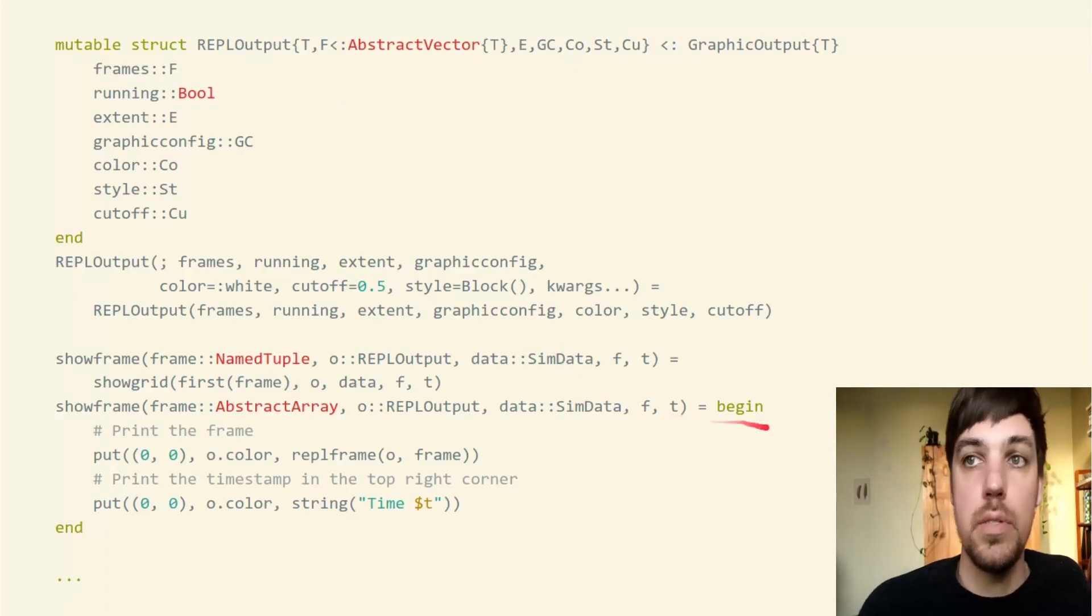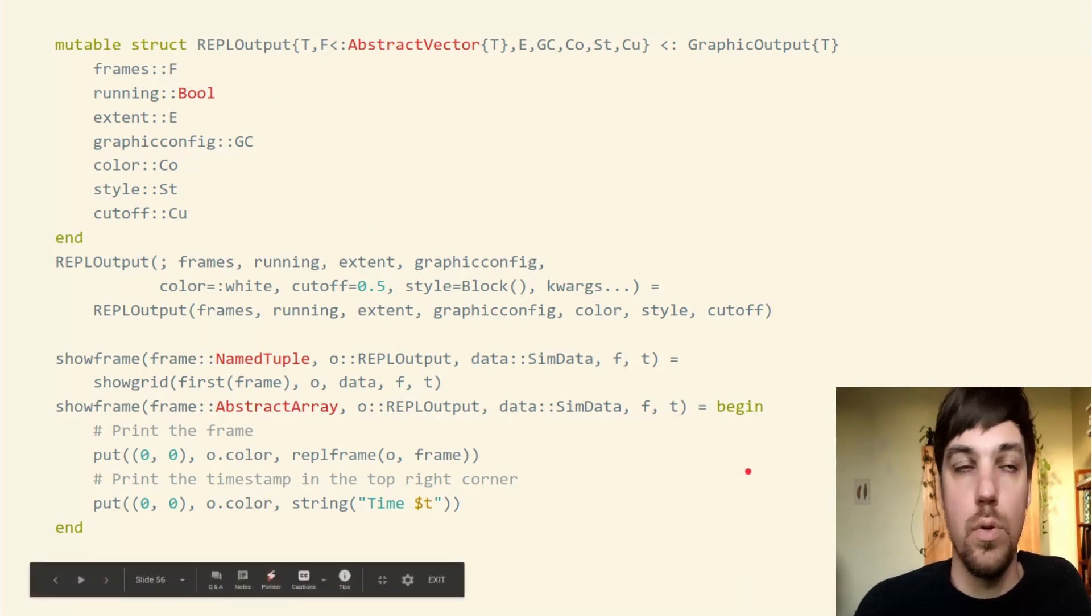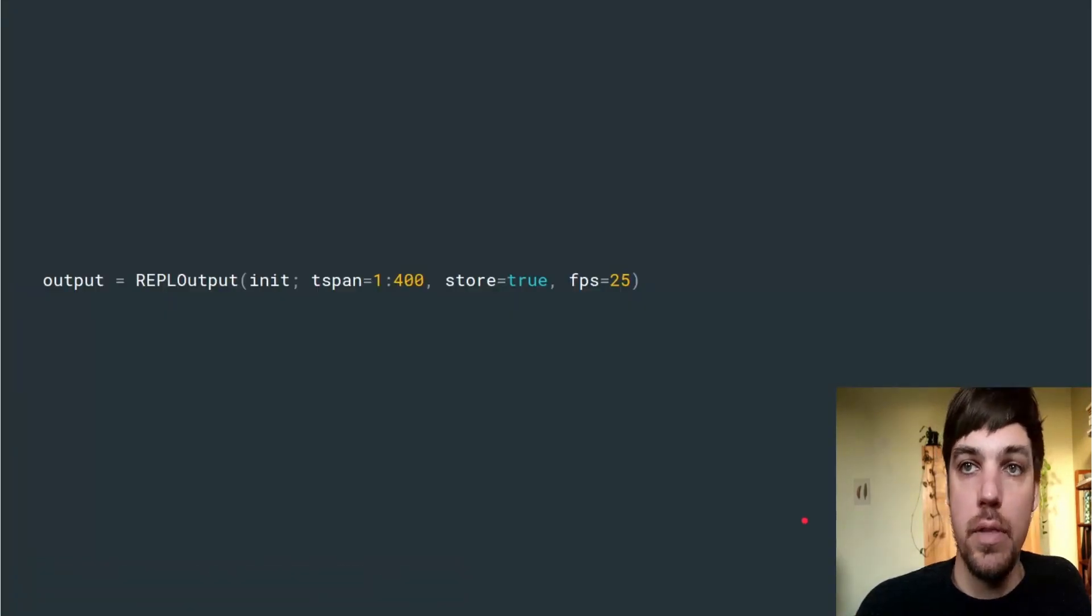The simplest example in the package is the REPL output that you saw earlier. It has a show frame method to go with the struct. You can define that in a script like this.